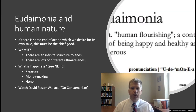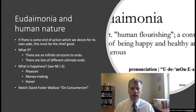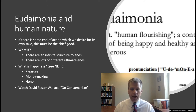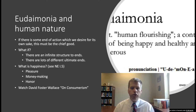Let's think about the connection between happiness and human nature. Aristotle says that if there's some end of action which we desire for its own sake, that end must be the chief good, and he identifies this with happiness. Whatever happiness is, it's going to be the ultimate end — something that human action aims at and is desired for its own sake. There are two challenges to this claim.